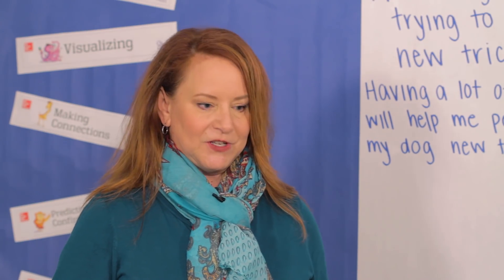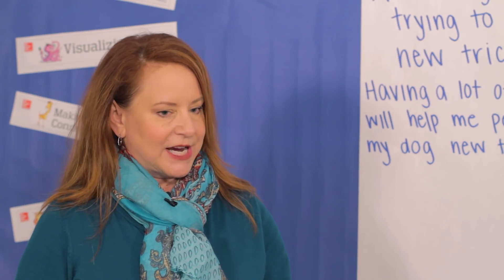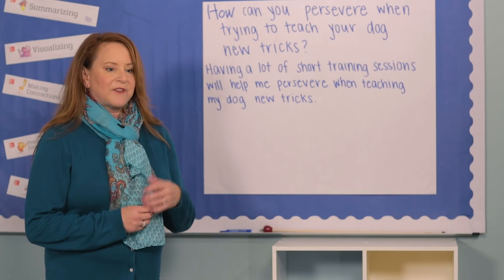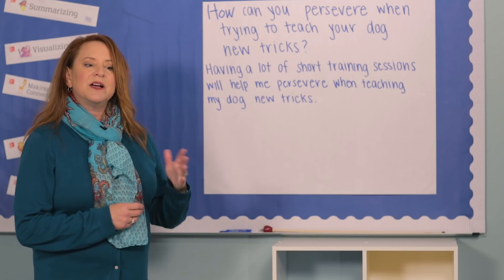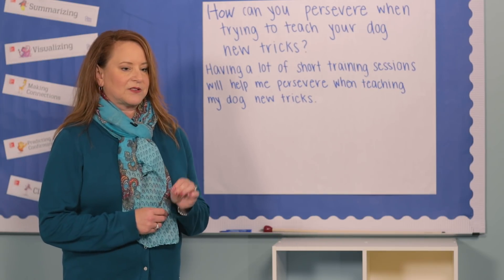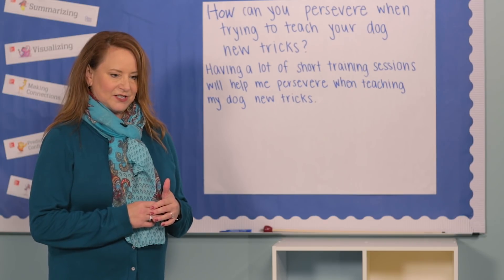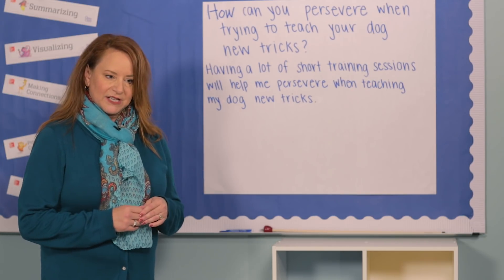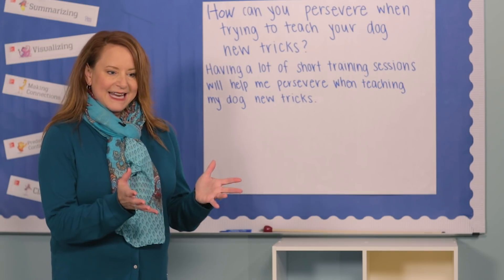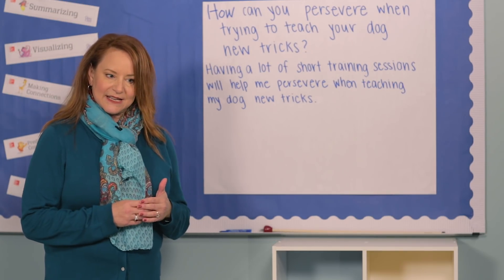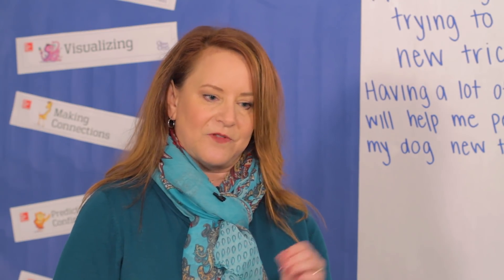After I've collected and reviewed new information, I need to revisit and maybe revise or change my conjecture. My first conjecture was: having a lot of short training sessions will help me persevere when teaching my dog new tricks. Now that I've gathered more information, I need to revise my conjecture. My new conjecture is: in order to persevere when training my dog, I need to have a lot of short training sessions, and I also need to use treats and lots of praise when he performs correctly.